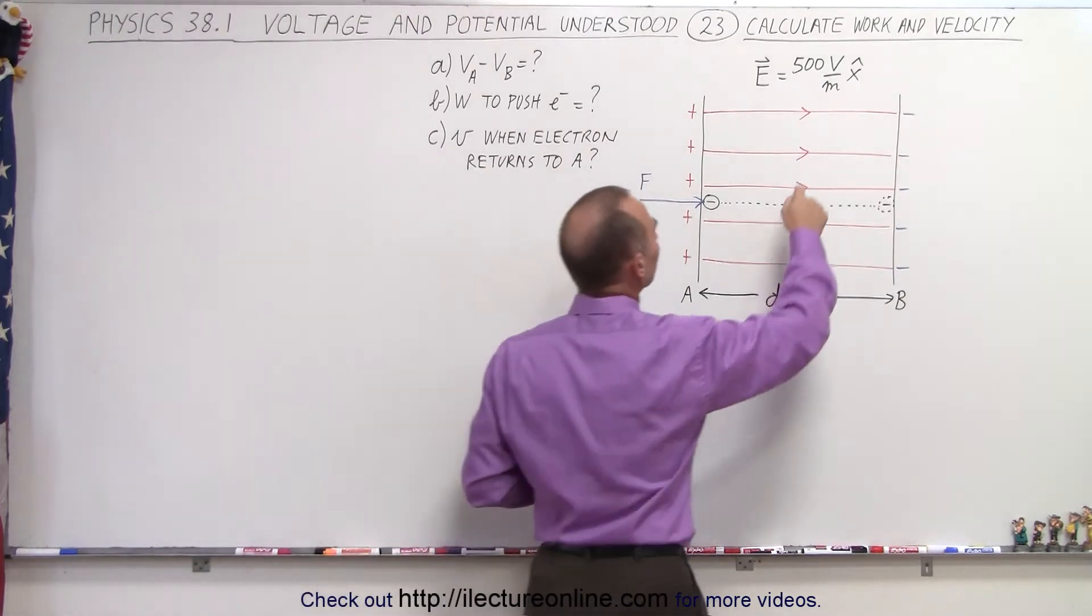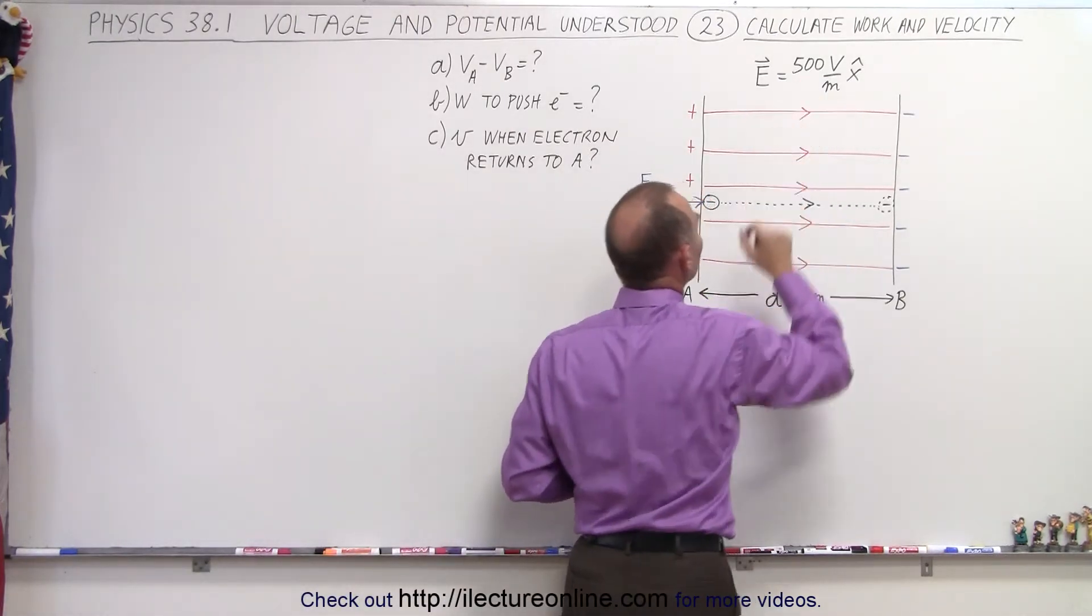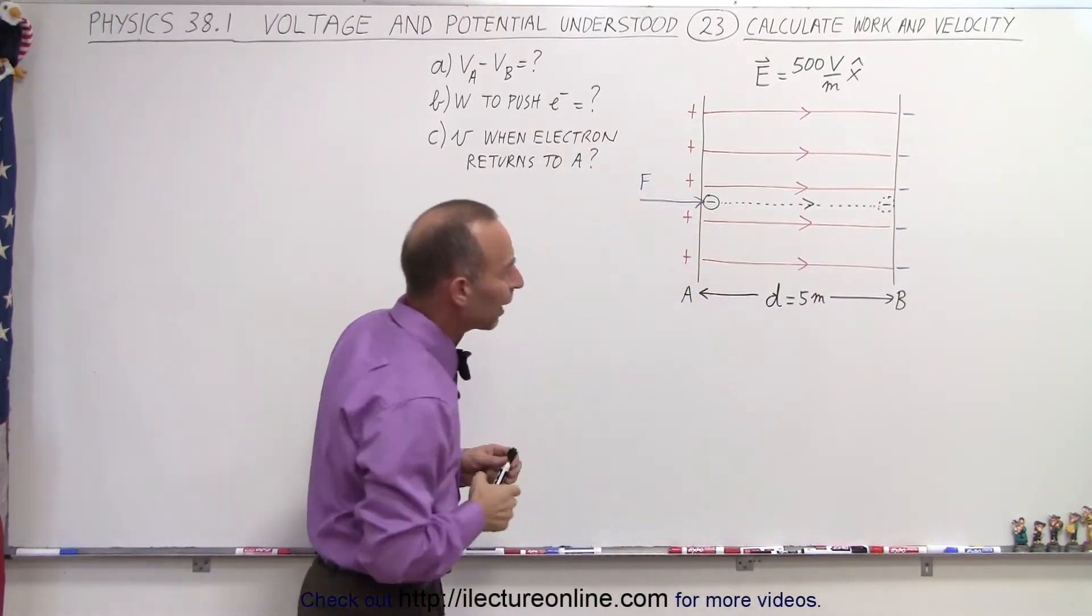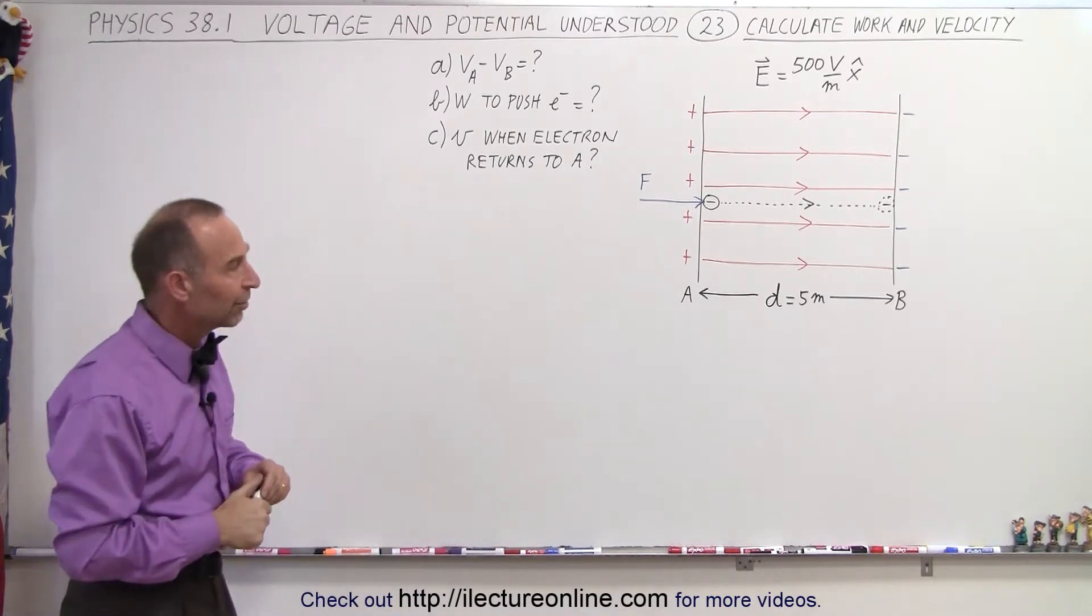The electric field strength is given to us in terms of volts per meter, in this case it's 500 volts per meter directed to the right, and the distance between the plates is 5 meters.